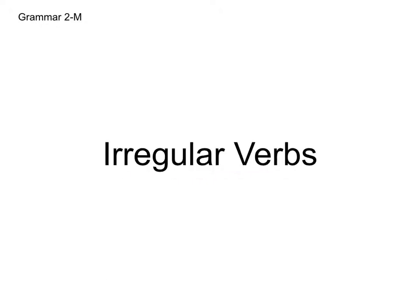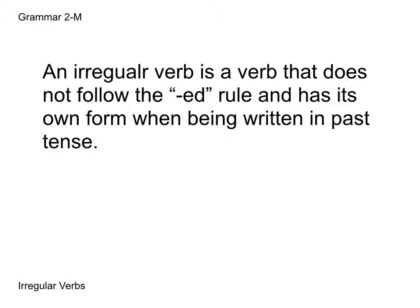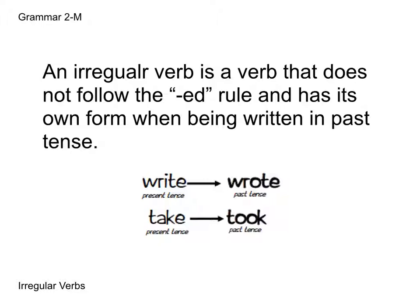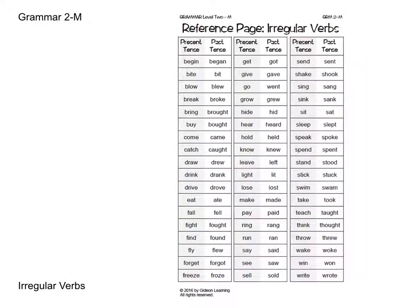Our next concept is irregular verbs. An irregular verb is a verb that does not follow the ED rule and has its own form when written in past tense. For example, "write" becomes "wrote" and "take" becomes "took." As you can see, there is no one pattern for how to write the past tense of irregular verbs. There is a reference page at the end of the book that gives you all the present and past tense forms for the irregular verbs found in Grammar 2M.